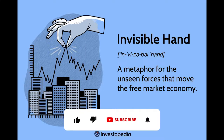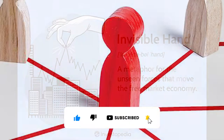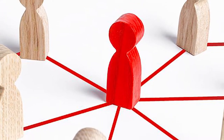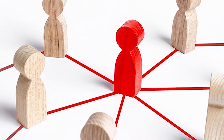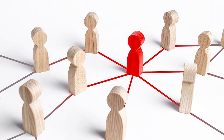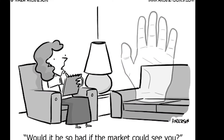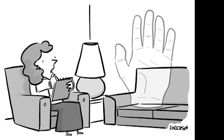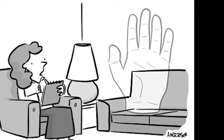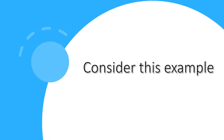The invisible hand is a metaphoric concept that refers to the self-regulating nature of the marketplace. According to Adam Smith, when individuals pursue their own self-interest, they unintentionally benefit society as a whole. In other words, the actions of individuals in the marketplace are guided by an invisible hand that results in the efficient allocation of resources and the optimal outcome for society.